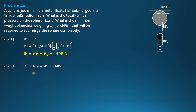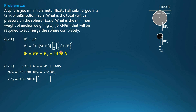The buoyant force in the concrete anchor is specific weight of oil — 0.8 times 9810 — times the volume of concrete, giving 7848 times volume of concrete. The buoyant force in the sphere is 0.8 times 9810 times pi over 6 times 0.9 cubed, because the sphere is totally submerged this time. The buoyant force in the sphere equals 2996 newtons.